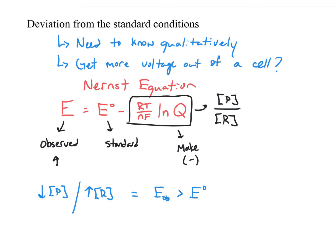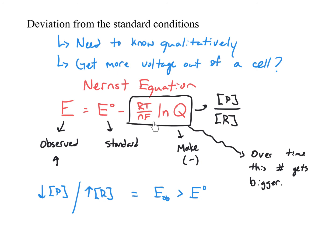As batteries run, they consume reactants and increase products, so Q grows over time. Eventually, the reactants get small and the products get large, and you start subtracting a positive number. When the term RT over NF times natural log of Q becomes large enough to equal the standard cell potential, then the battery runs out — you're subtracting a number from itself, and the observed voltage reaches zero. This is why batteries run out over time: reactants are consumed, products build up, and eventually the two numbers are equal and subtract to zero.